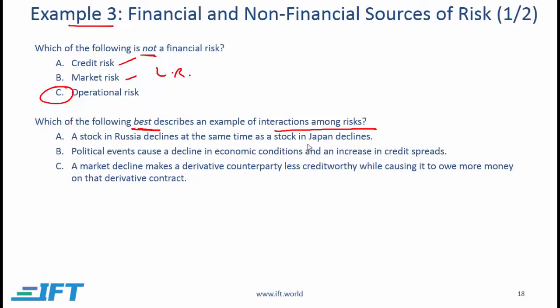Another way to approach these questions: look for situations where the link is not completely obvious. In option B, political turmoil leading to bond price declines and wider credit spreads is a completely expected, direct relationship. In option A, two things happening simultaneously is not an interaction. In option C, market risk and credit risk — ostensibly unrelated — clearly interact: a market decline causes a counterparty to be both less creditworthy and to owe more on the derivative. So C best describes an interaction among different kinds of risks.